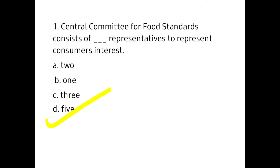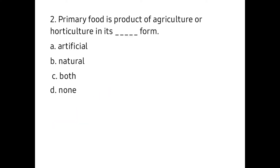Second one: The primary food is a product of agriculture or horticulture in its dash form. A) Artificial, B) Natural, C) Both, D) None. The correct answer is B) Natural.